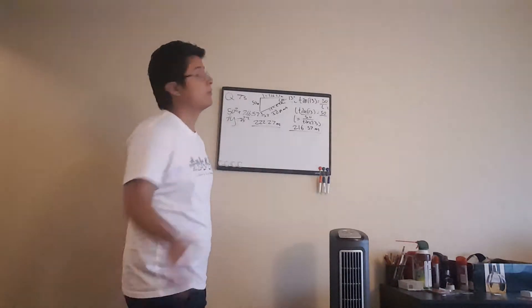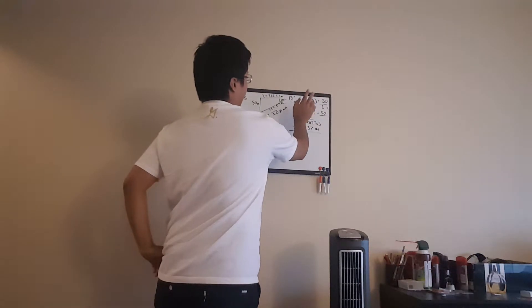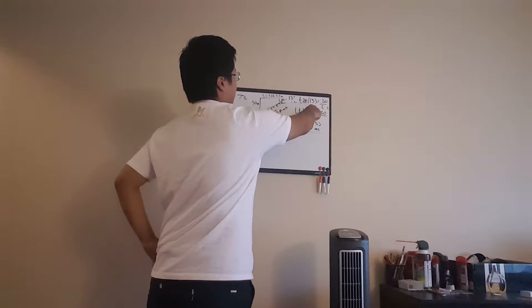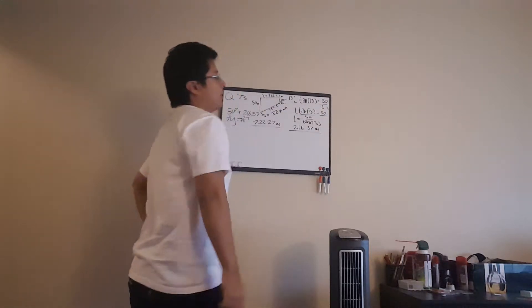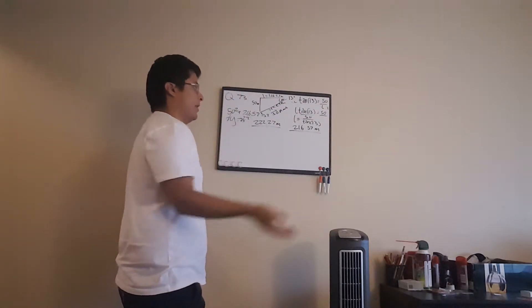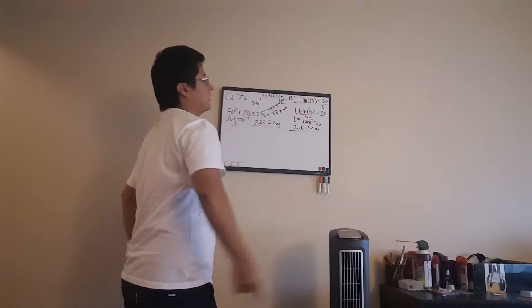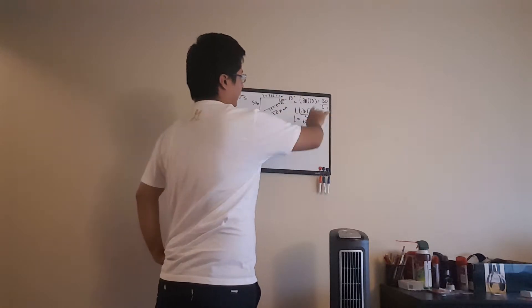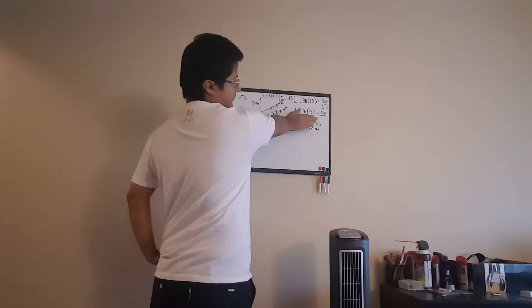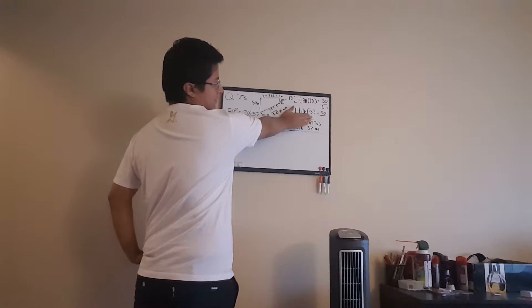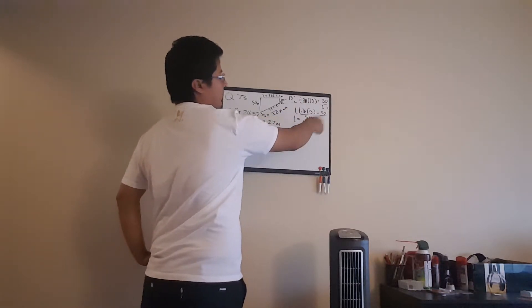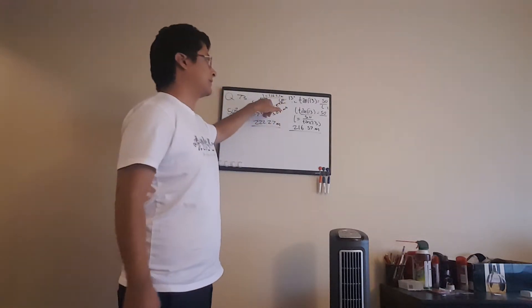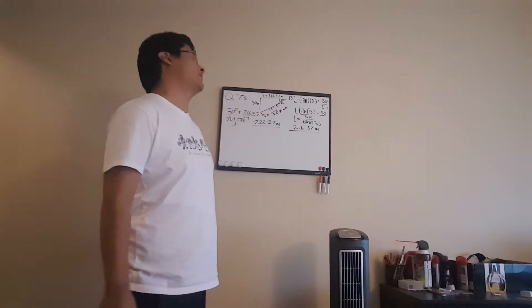So with the information that we know, we are starting off with tangent of 13 equals 50 over L. I then decided to multiply by L to get L tangent of 13 equals 50. After that, I just divided 50 by the tangent of 13. That eventually gave us L equals 50 over tangent of 13. When I put that in the calculator, we get that this distance is 216.57 meters.